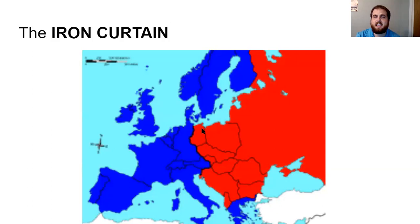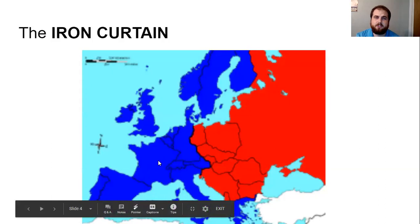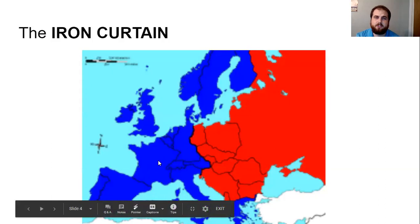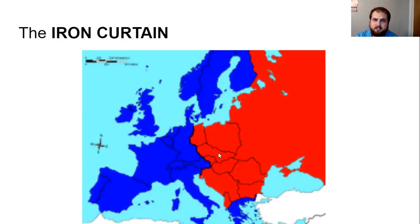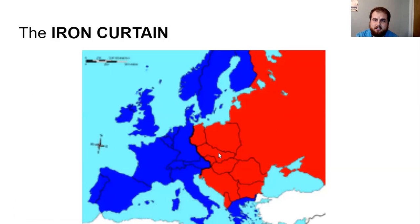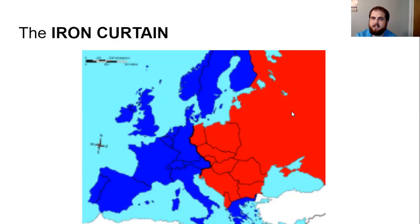Here is the Iron Curtain — the line that divided Eastern and Western Europe. The blue countries are capitalist free market economies: the United States' allies like Great Britain, France, Italy, Spain, Scandinavia, and West Germany. But East Germany was under Soviet control, along with Poland, Czechoslovakia, Hungary, Romania, Bulgaria, Yugoslavia, and Albania — all forced to become communist puppet regimes of the Soviet Union.